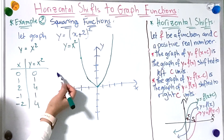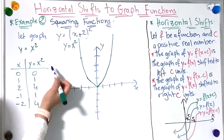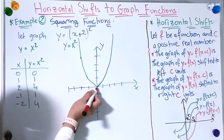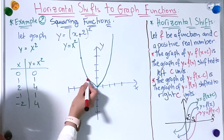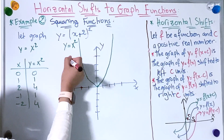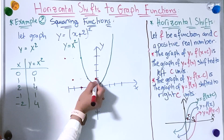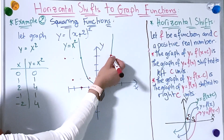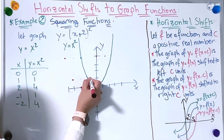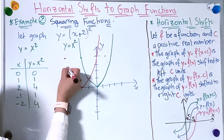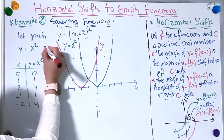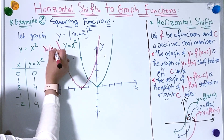Now I'm going to graph y = (x + 2)² by using the graph of y = x² and shifting it c units to the left. Using the points I already have, I'll shift each point 2 units to the left. Now I'm going to connect the points. And now I have found y = (x + 2)².